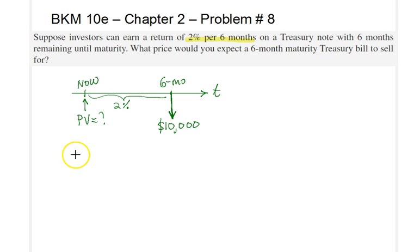As such the problem would simply be present value equal to future value divided by the discount. And in this case the discount is 2% applied once only. That would give you $10,000 divided by 1.02.